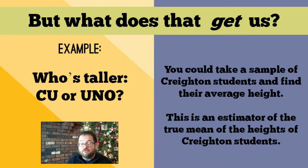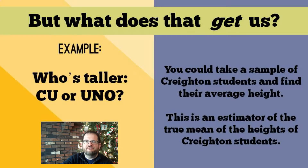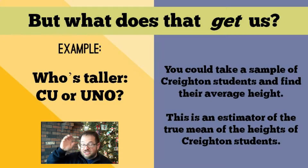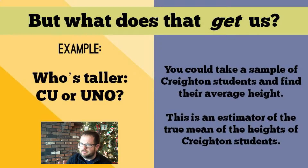One strategy would be to take a sample of Creighton students and find their average height. That would be easy enough. How to pick the sample is a whole discipline called sampling theory, a sub-discipline within statistics itself. But let's make this really simple — we're just going to take the next hundred people to leave the library. You probably still have biases there. Maybe people who go to the library tend to be taller, or maybe people who go to the library at this time of day tend to be shorter. This is fraught with problems. But you could take a sample and compute their average height. It is the average height of just those students.